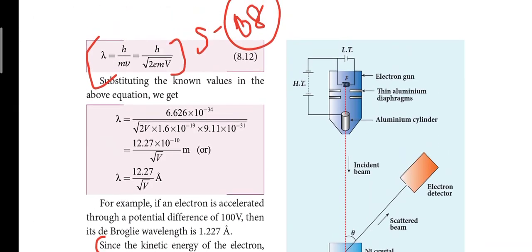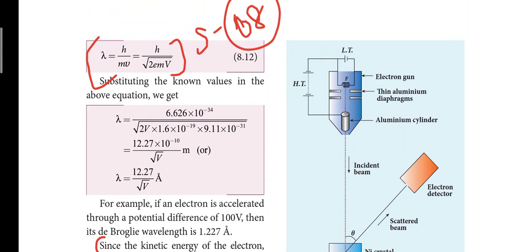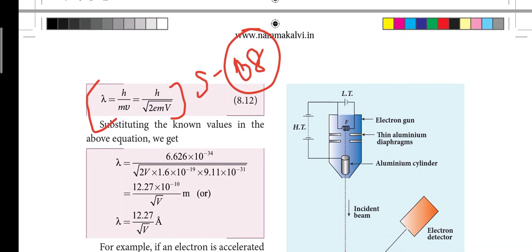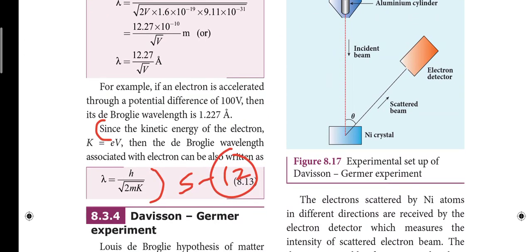Next page, there is one equation: lambda is equal to h by mv is equal to h by root of 2emv, so that is the 8th short answer. There is one equation, that is parallel, since the kinetic energy of the electron k is equal to ev, that is the 12th short answer.